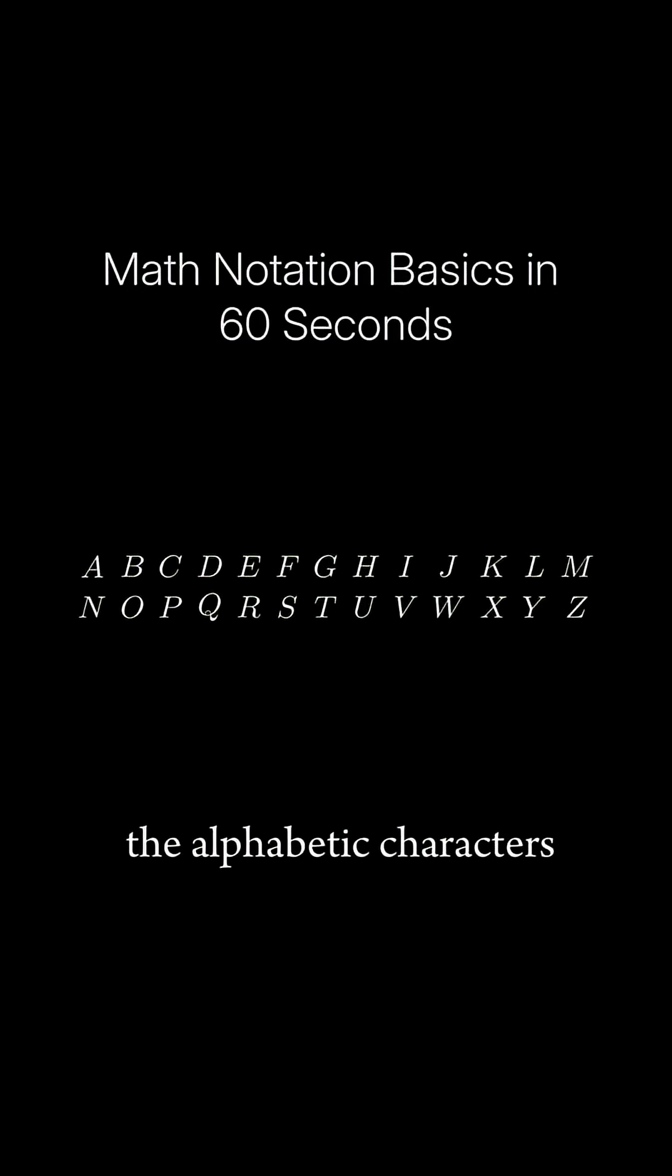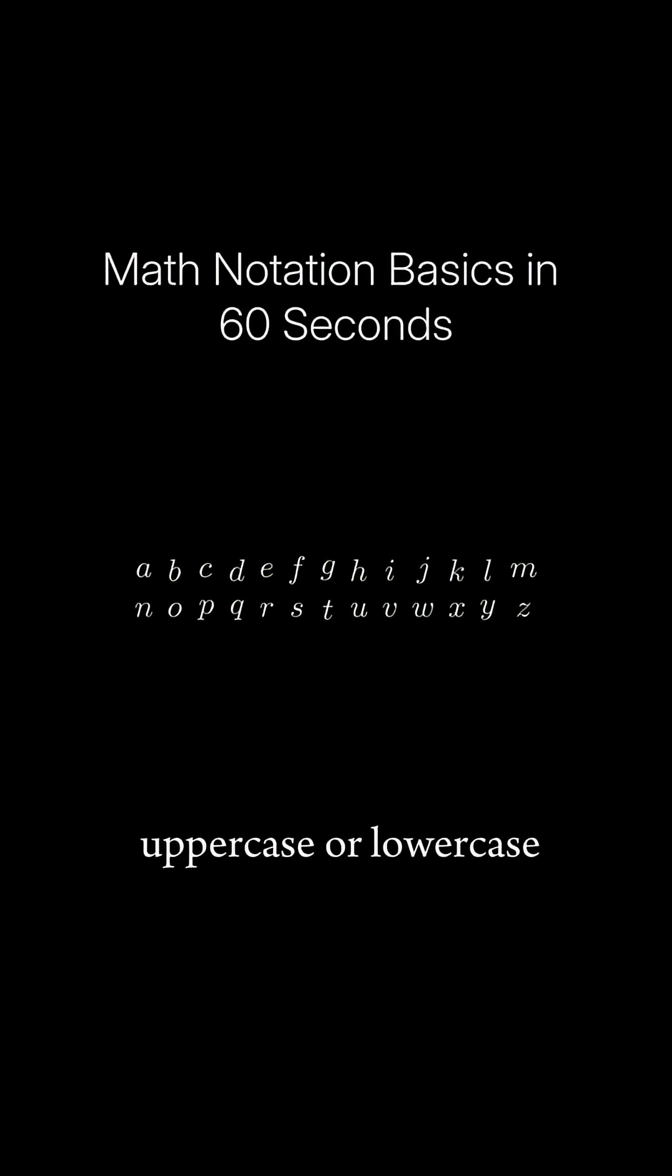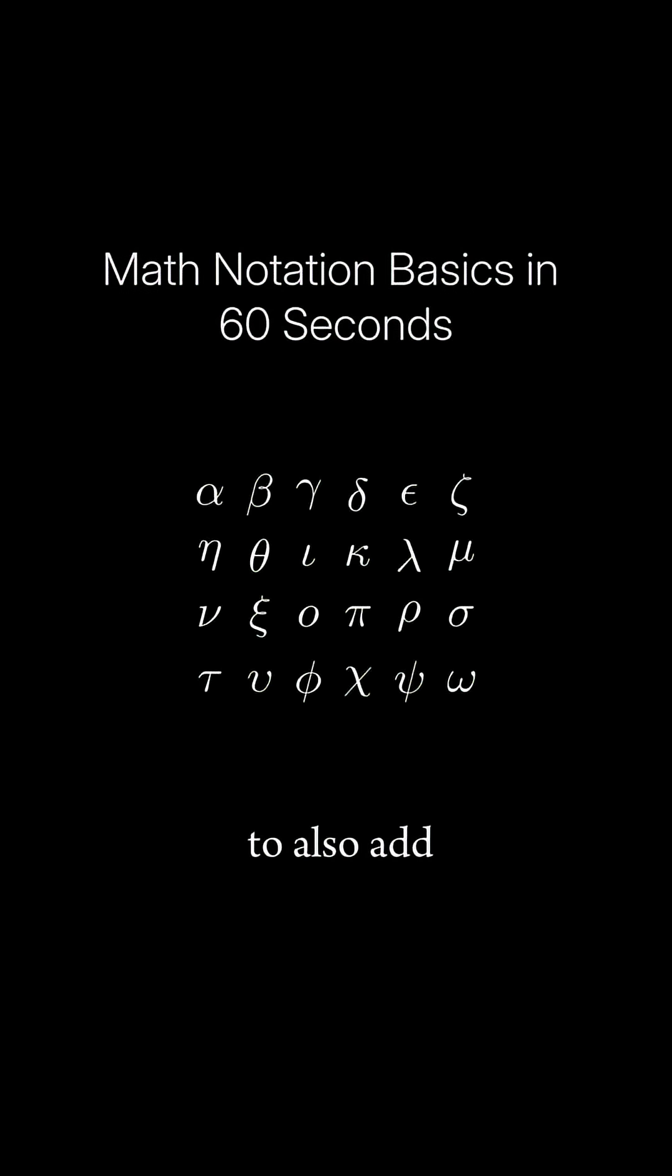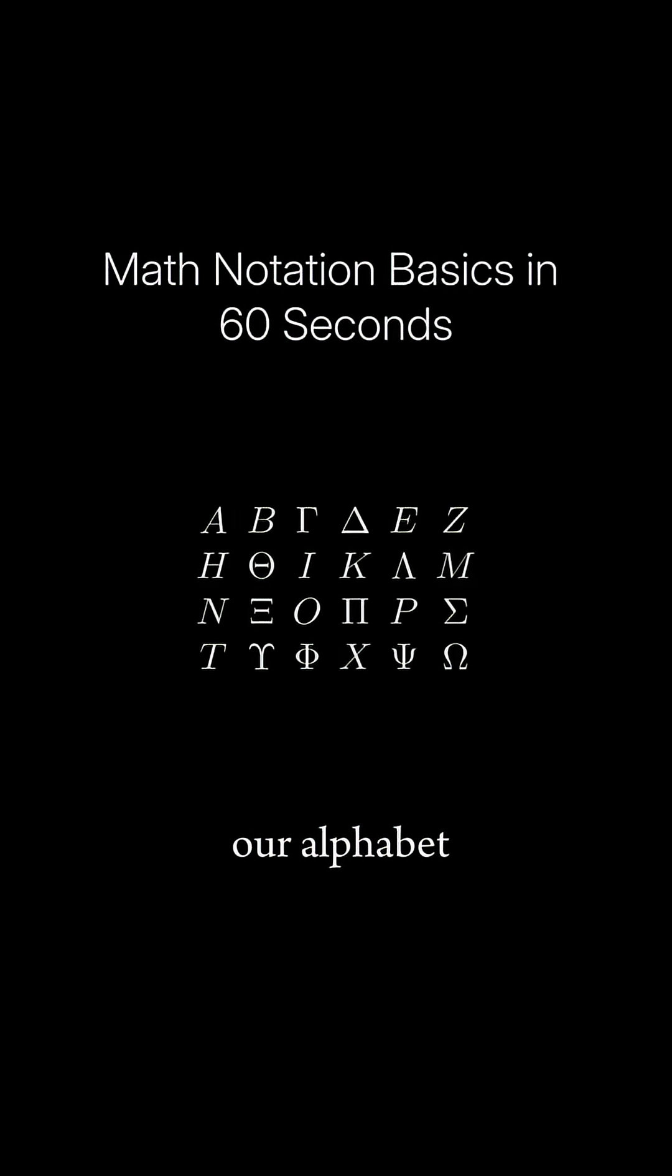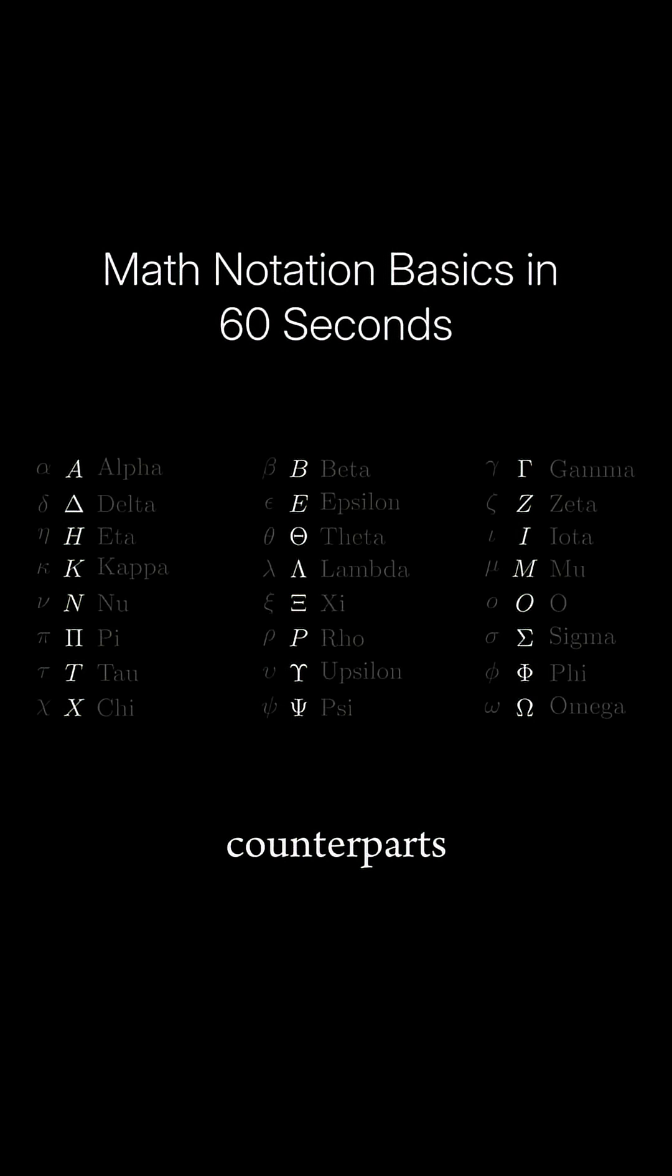Let's start with the alphabetic characters, which can be uppercase or lowercase. These don't provide enough variable names, coefficients, constants, etc., so we also add Greek letters to our alphabet, including their uppercase and lowercase counterparts.